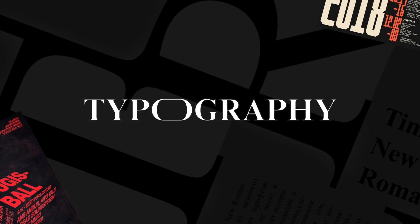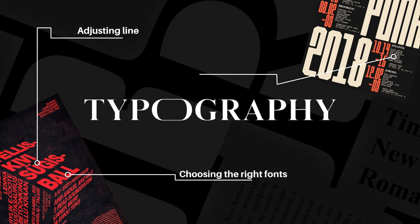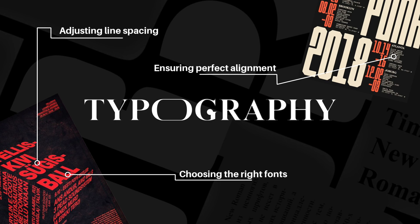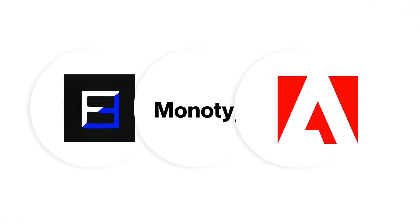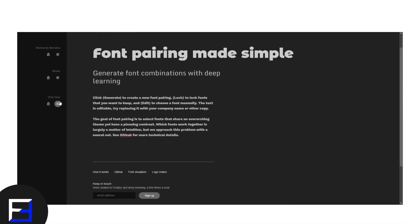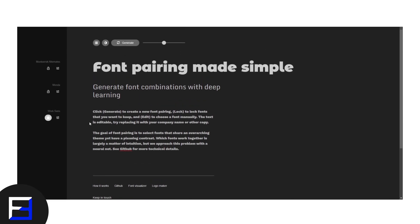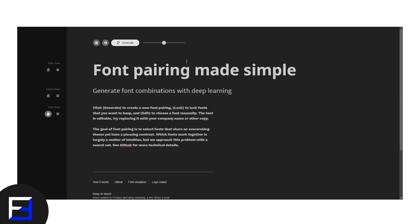Typography is another area where automation saves a massive amount of time. Choosing the right fonts, adjusting line spacing, and ensuring perfect alignment used to take hours. Now AI-powered tools like Fontjoy, Monotype AI, and Adobe's auto font suggestions can do the heavy lifting. Fontjoy and Monotype AI analyze fonts and suggest pairings that work together in harmony — but do engage your creative eye to determine if the options presented are right for the project or brief.